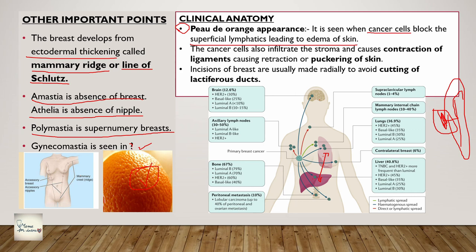The cancer cells also infiltrate the fibrous stroma, causing the suspensory ligaments of Cooper to retract. Because of this retraction, there is puckering of the skin - folds of the skin. Incisions of the breast are usually made radially - this is very important if you are interested in surgery. Any surgeries related to the thorax require you to avoid cutting the lactiferous ducts, so to avoid cutting the lactiferous ducts you have to keep a radial incision, as shown in the picture.